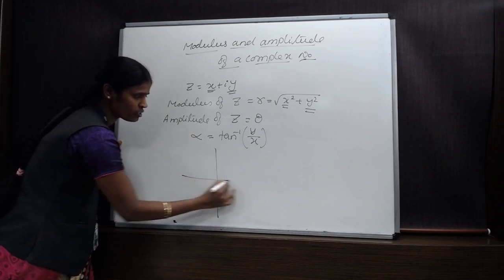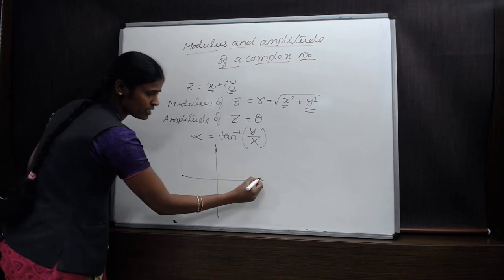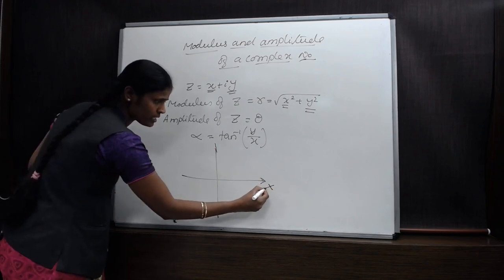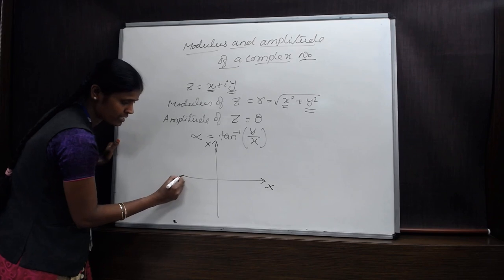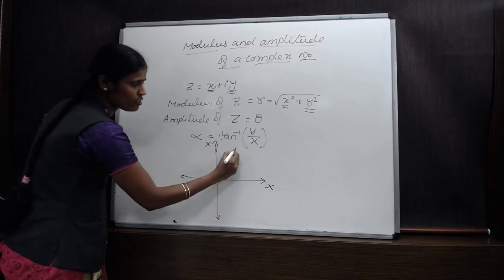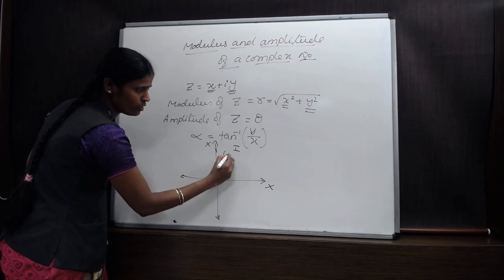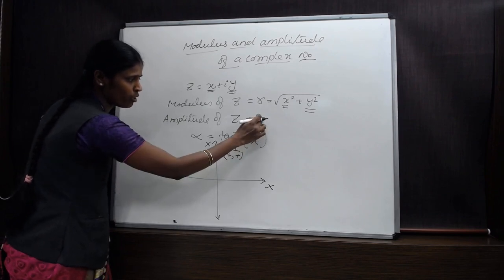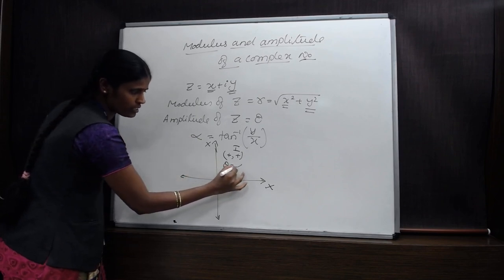For solving problems, we first need to know the quadrant rule of a complex number. We have the x-axis, y-axis, negative x-axis, and negative y-axis. In the first quadrant, x is positive and y is also positive, so our amplitude θ is nothing but α itself.